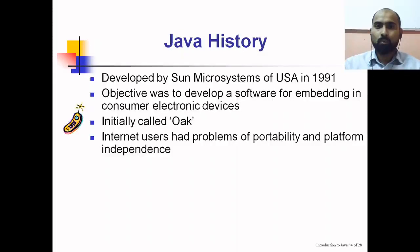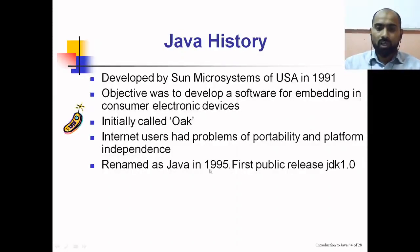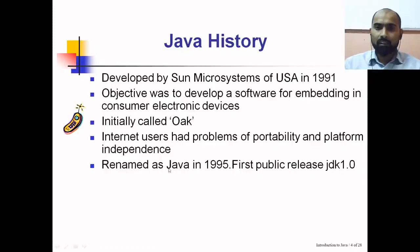Later on, other browser vendors also announced their support for Java. The original name Oak was renamed to Java in 1995. Because of some legal issues — the name Oak was already registered by another company — the name had to be changed, and the new name Java was adopted in the year 1995.